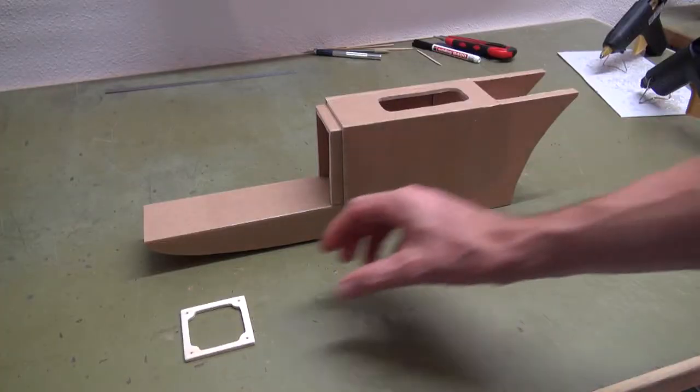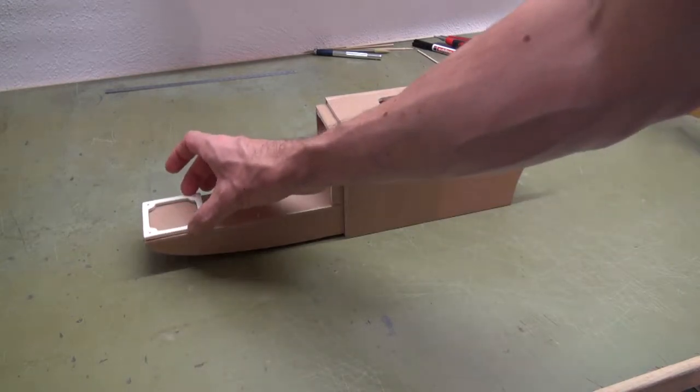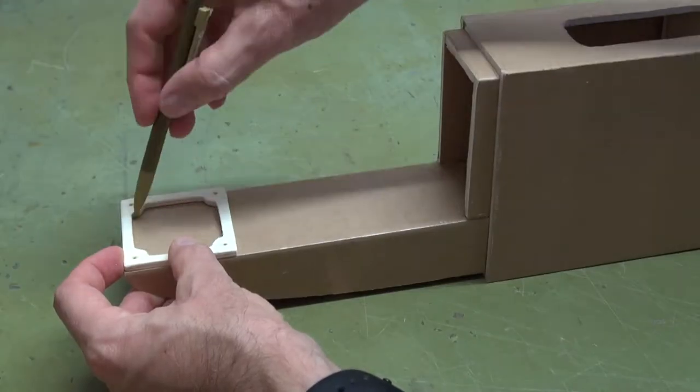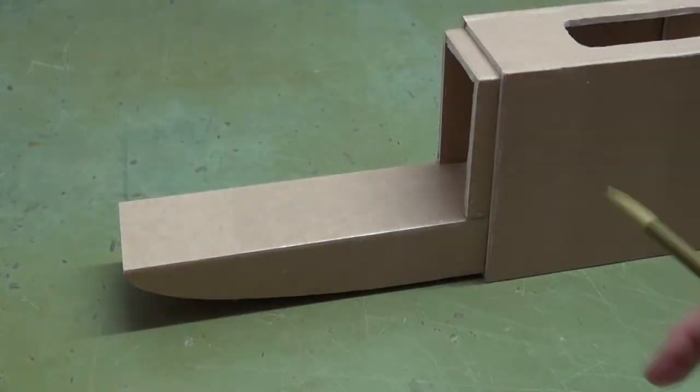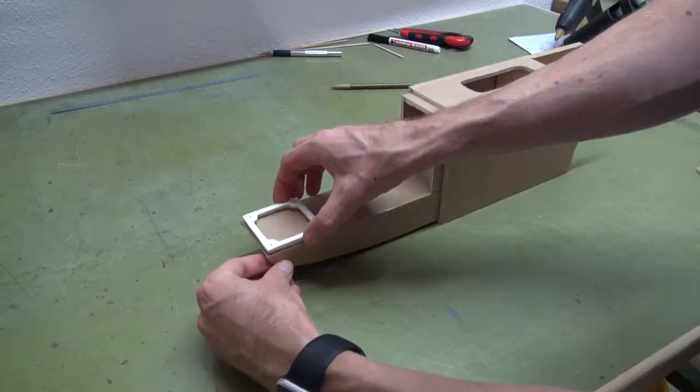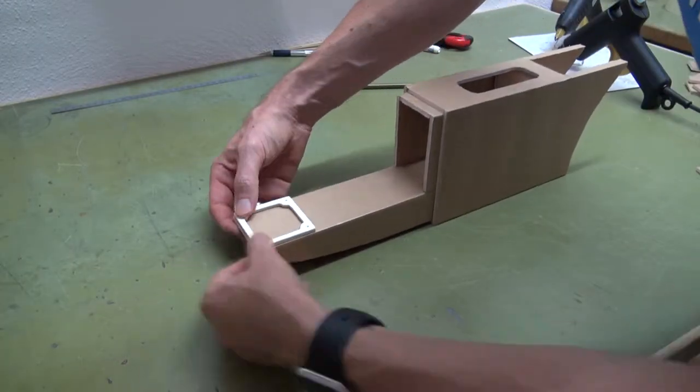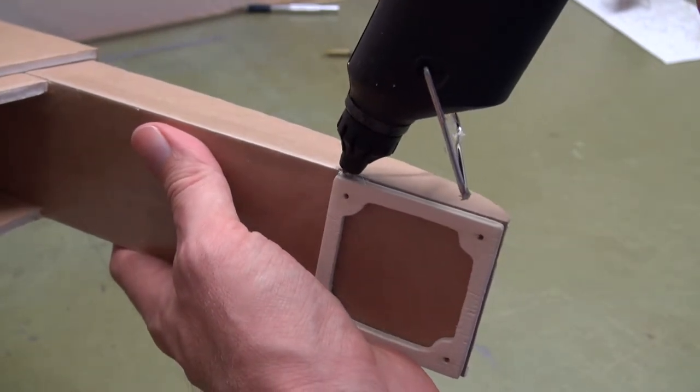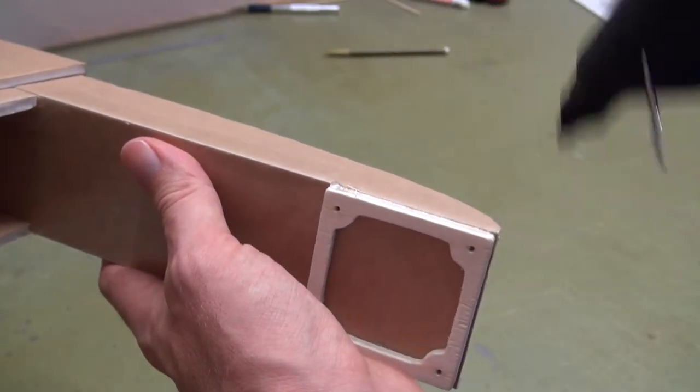I'll show you how to install the base frame on an FT Bronco, but any other fuselage with a flat surface will be fine. Mark the position and apply a bead of glue. Press the frame firmly onto the fuselage. Add some more glue around the outside and remove any excess glue with a scrap piece of foam.